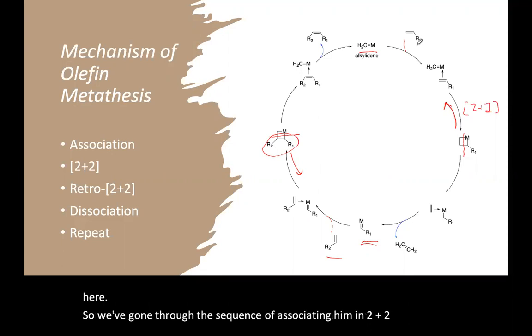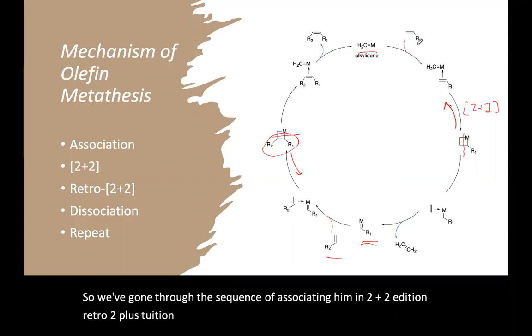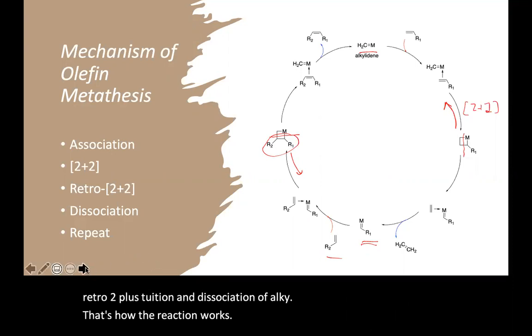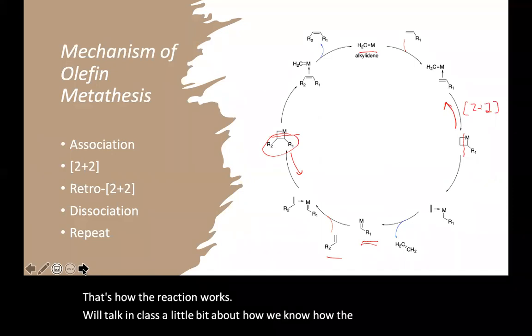So we've gone through the sequence of associating a new [2+2] addition, retro [2+2] addition, and dissociation of alkene. That's how the reaction works. We'll talk in class a little bit about how we know how the reaction works, what the mechanistic evidence is.